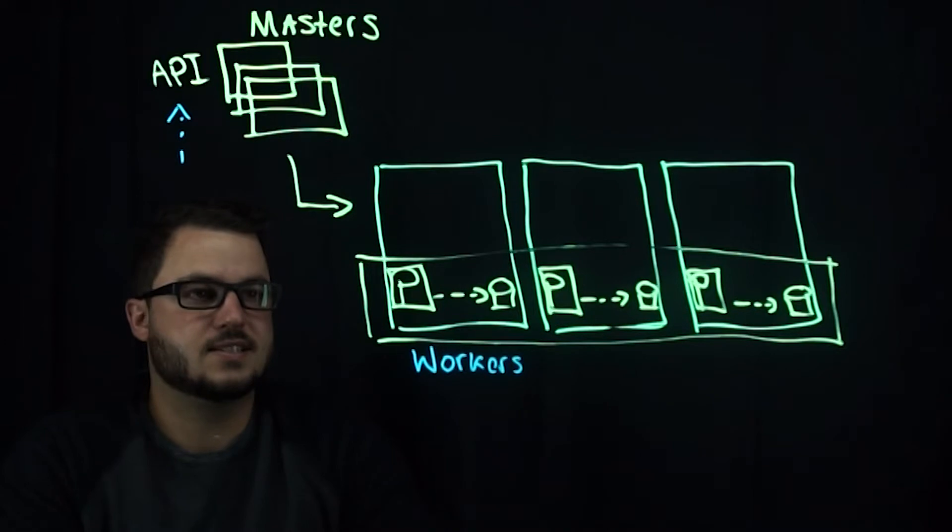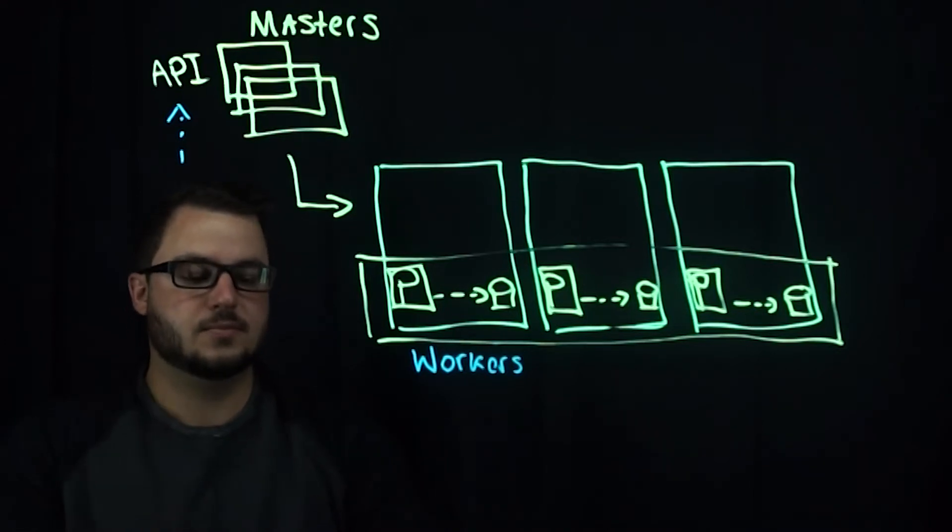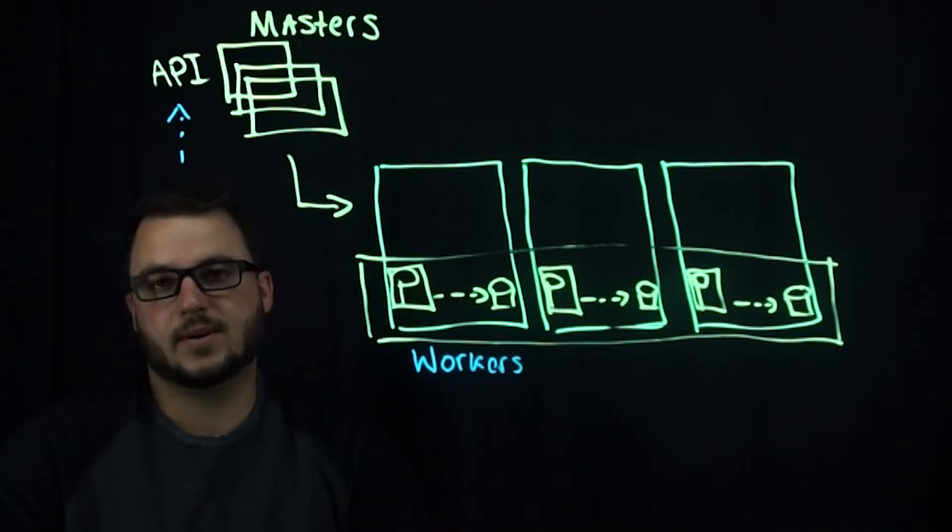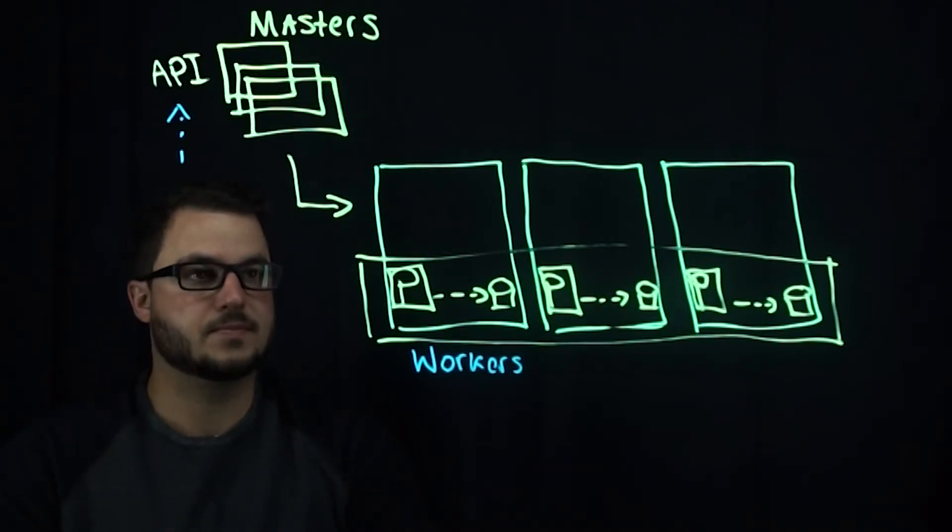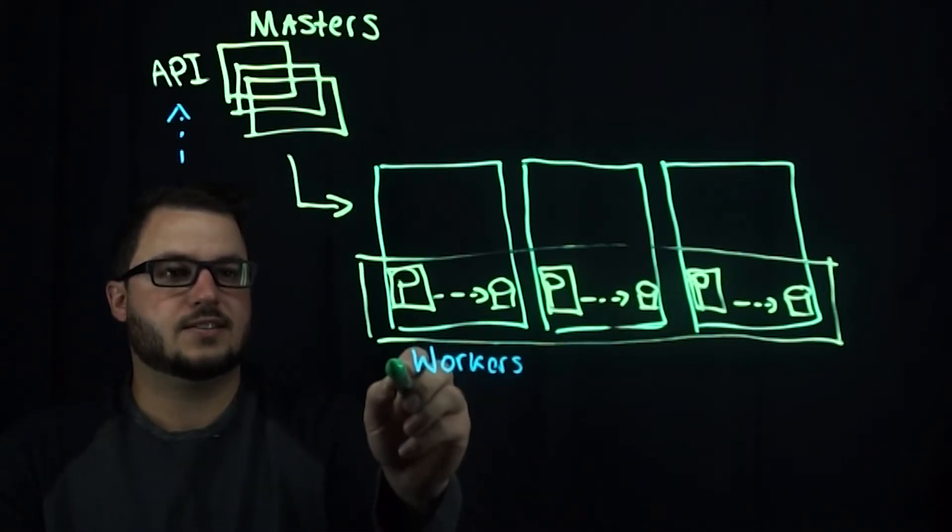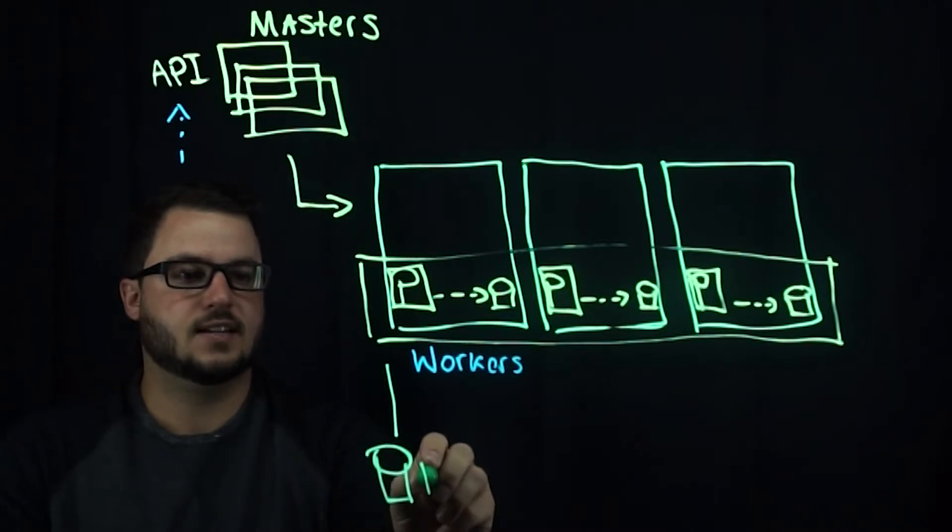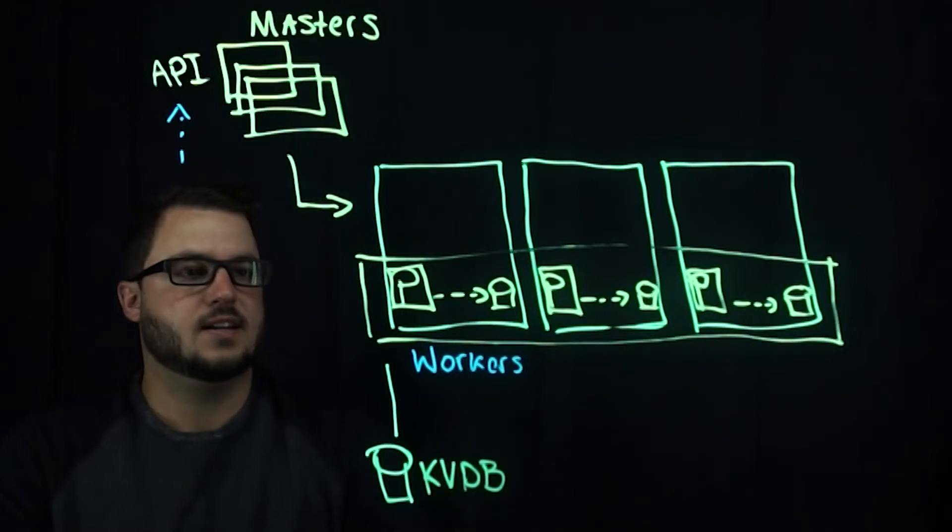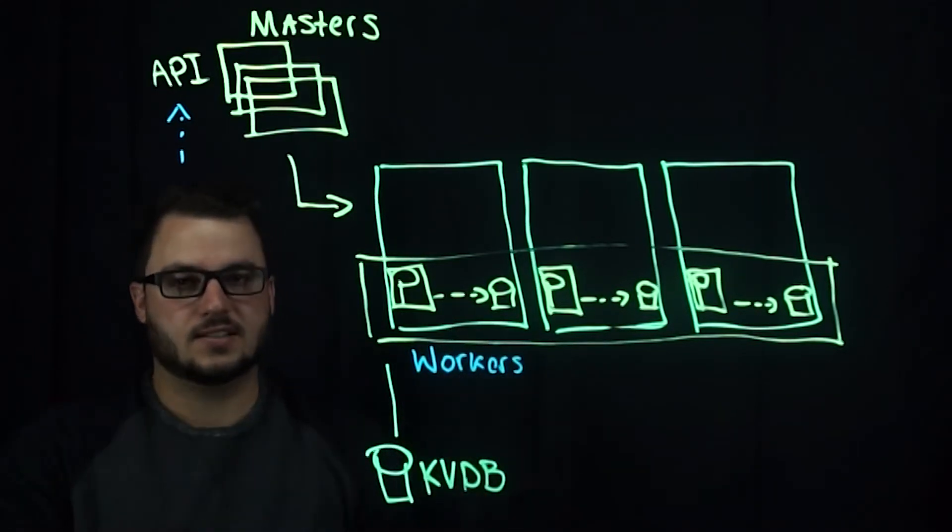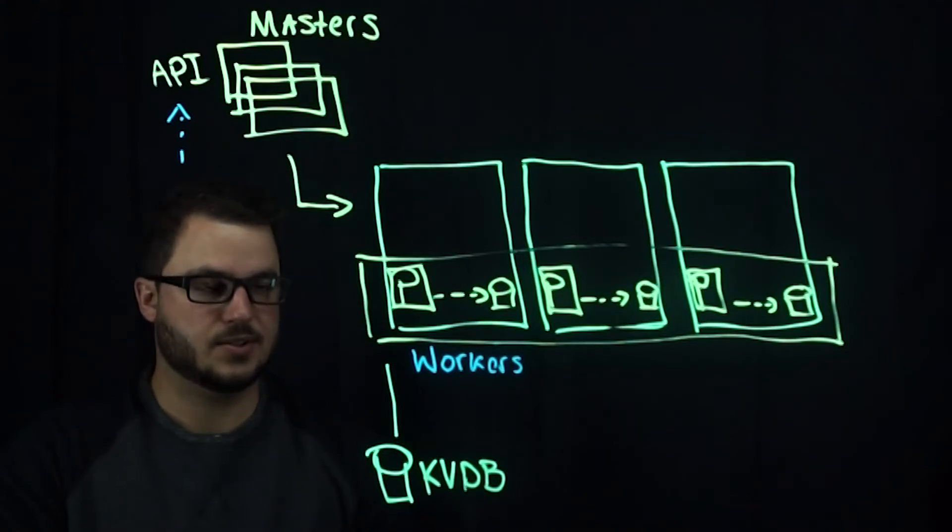Portworx itself will run via Kubernetes as a daemon set or an operator if you're on something like OpenShift. It'll create this pool of storage, connect to a key value database like etcd, and that's how Portworx initially gets started on your cluster.